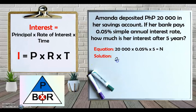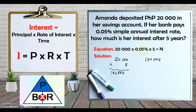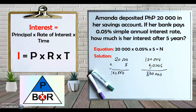We multiply 20,000 by 5 first to get 100,000, then multiply by 0.05%. Remember, since this is in percent, we need to convert it to a decimal — remove the percent symbol and move the decimal point two places to the left, so 0.05% becomes 0.0005. Multiplying 100,000 by 0.0005 and counting the decimal places gives us the simple interest: Amanda's interest after five years is 50 pesos.